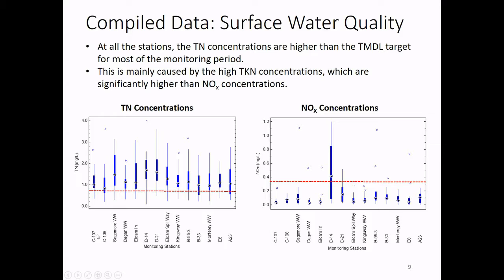This surface water data shows that for all 14 stations, the TN concentration is higher than the TMDL target. The TMDL standard is 0.74 mg/L — you can tell TN concentration in the surface water has already exceeded the TMDL target, mainly because of TKN, which is organic nitrogen. If you look at the NOx concentration — nitrate and nitrite together — for most stations the concentration is smaller than the TMDL target, except for one. But be careful: those are surface water data, not groundwater data. Nitrogen concentration in surface water and groundwater are very different because surface water has more organic nitrogen than groundwater.